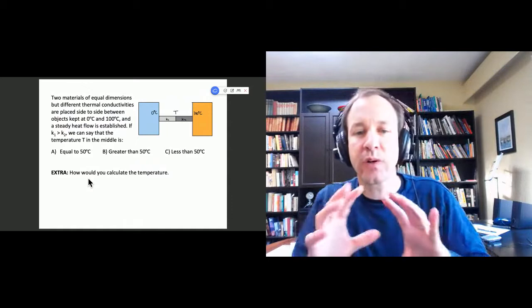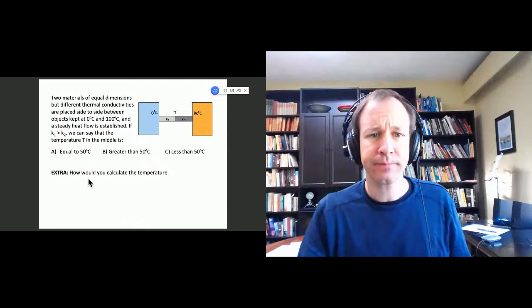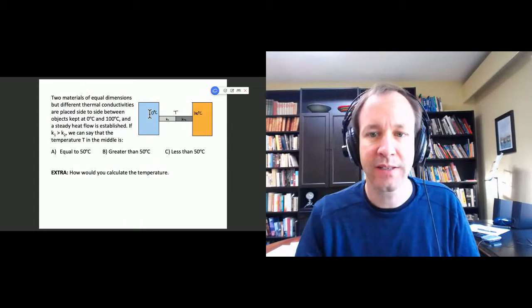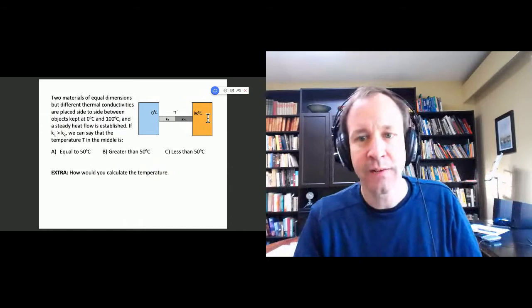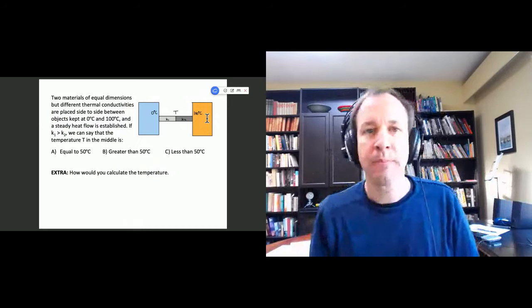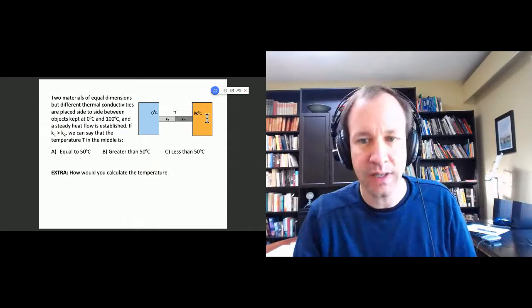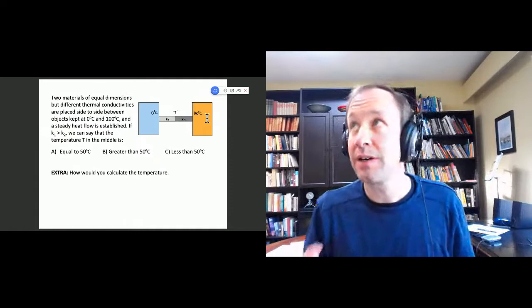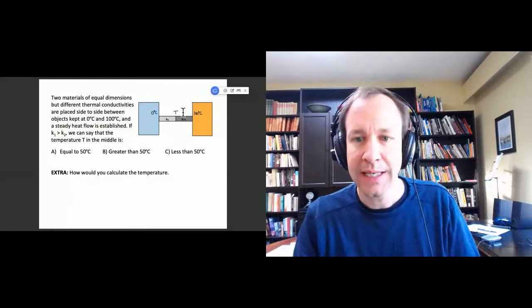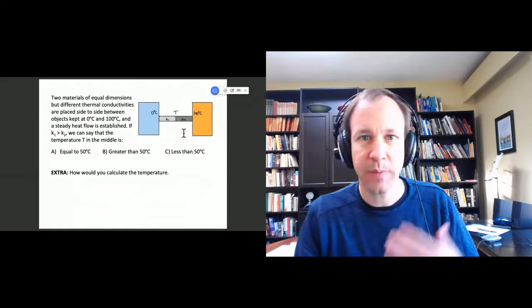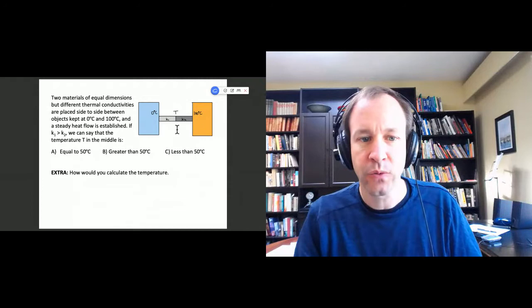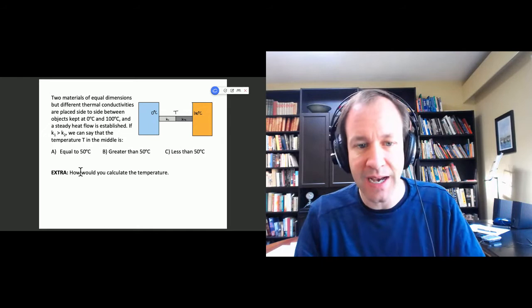I want to start with a question. We have two objects — one at zero degrees, one at 100 degrees — and we maintain those temperatures so heat flows continuously from the 100-degree object to the zero-degree object. But the heat flows through two different materials: one on the right with a smaller thermal conductivity k2, and one on the left with a larger thermal conductivity k1. As we let this settle to a steady heat flow, what will the temperature in the middle settle down to — equal to 50 degrees, greater than 50, or less than 50?